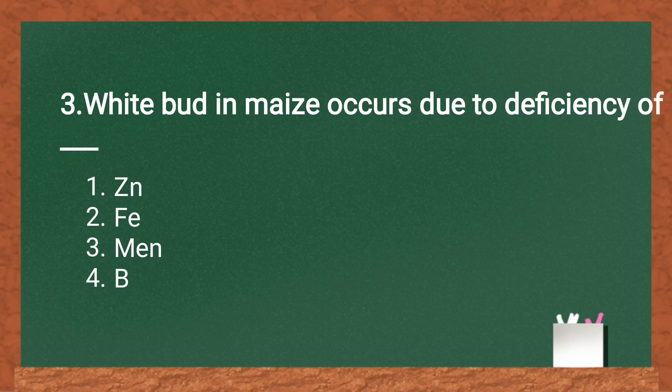White bud in maize occurs due to the deficiency of zinc, iron, manganese, or boron. The answer is zinc.